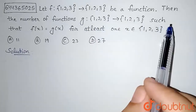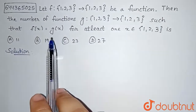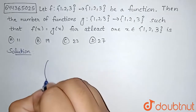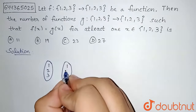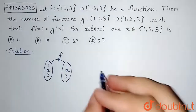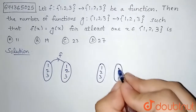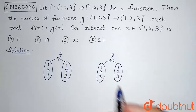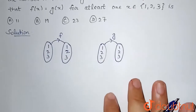We need to find the number of functions g such that f(x) = g(x) for at least one x in {1,2,3}. We are given a set {1,2,3} to {1,2,3} with function f defined on them, and similarly a set {1,2,3} to {1,2,3} with function g defined.